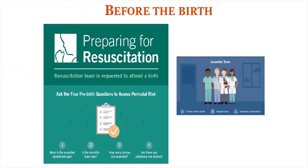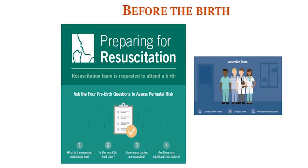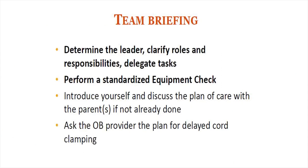Just before birth, preparing for resuscitation involves 4 pre-birth questions: What is the expected gestational age? Is the amniotic fluid clear? How many babies are expected? And are there any additional risk factors? A team briefing is very important — determine the team leader, clarify roles and responsibilities, and delegate tasks. Also perform a standardized equipment check, introduce yourself and discuss the plan of care with the parents, and ask the OB provider about the plan for delayed cord clamping.